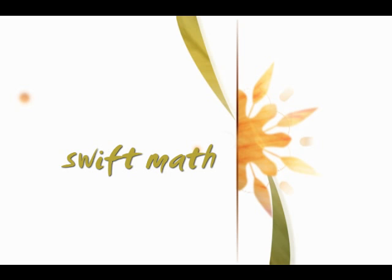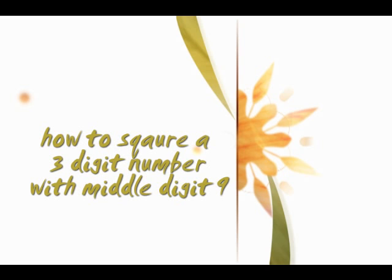Welcome to Swift Math. This video shows a simple and extremely fast method for squaring a 3-digit number whose middle digit is 9. Once you understand this method, it should not take more than 3 to 4 seconds to square a 3-digit number having 9 as the middle digit.